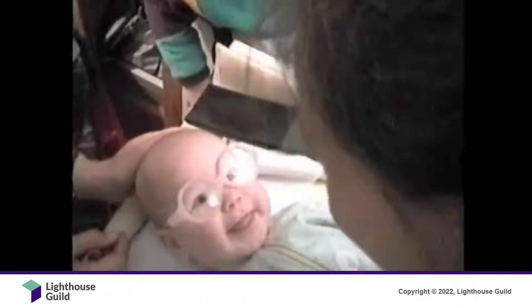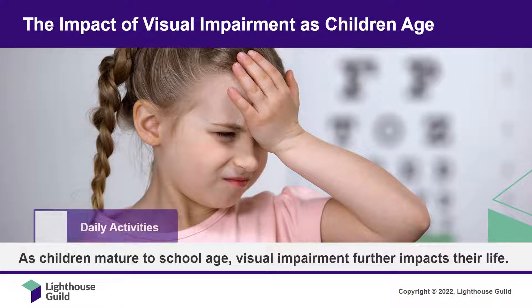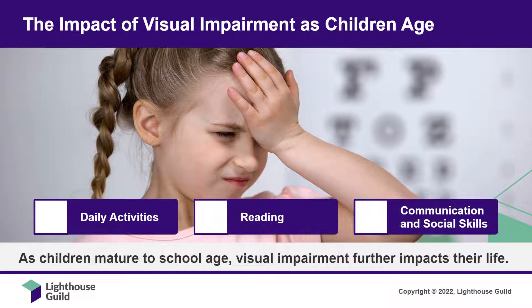Now that we've explored an example of misdiagnosed infantile autism, let's learn how visual impairment affects children. As children mature to school age, visual impairment further impacts learning, independence and daily activities, reading and communication, and the ability to form personal connections.